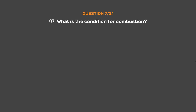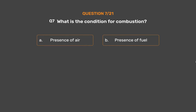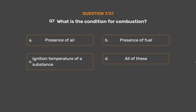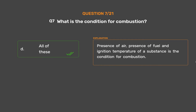Question number 7: What are the conditions for combustion? Option A: Presence of air. Option B: Presence of fuel. Option C: Ignition temperature of a substance. Option D: All of these. The correct answer is Option D: All of these. Presence of air, presence of fuel, and ignition temperature of a substance are the conditions for combustion.